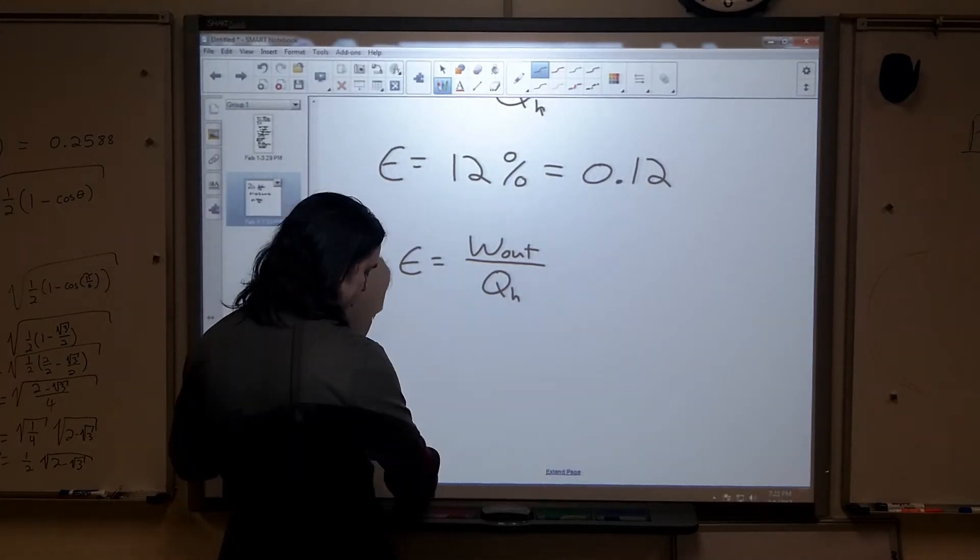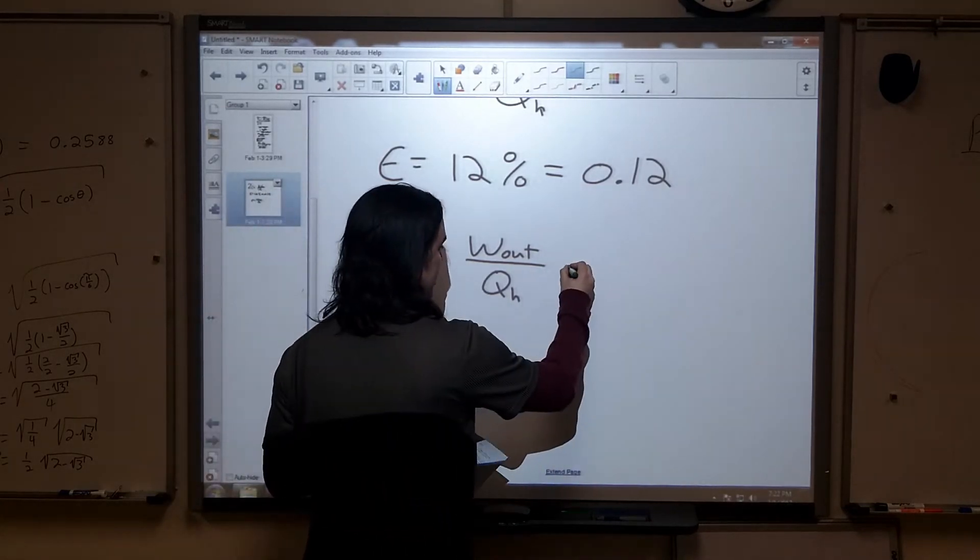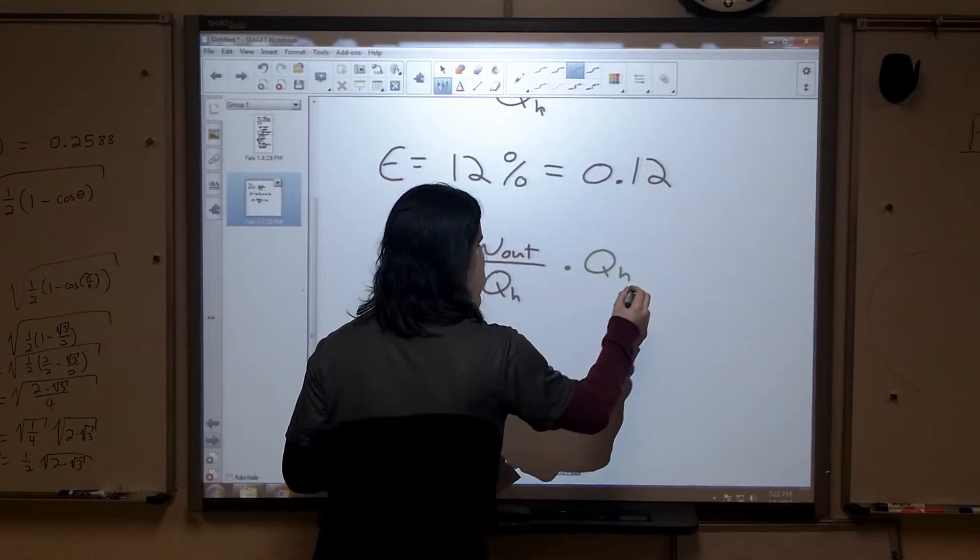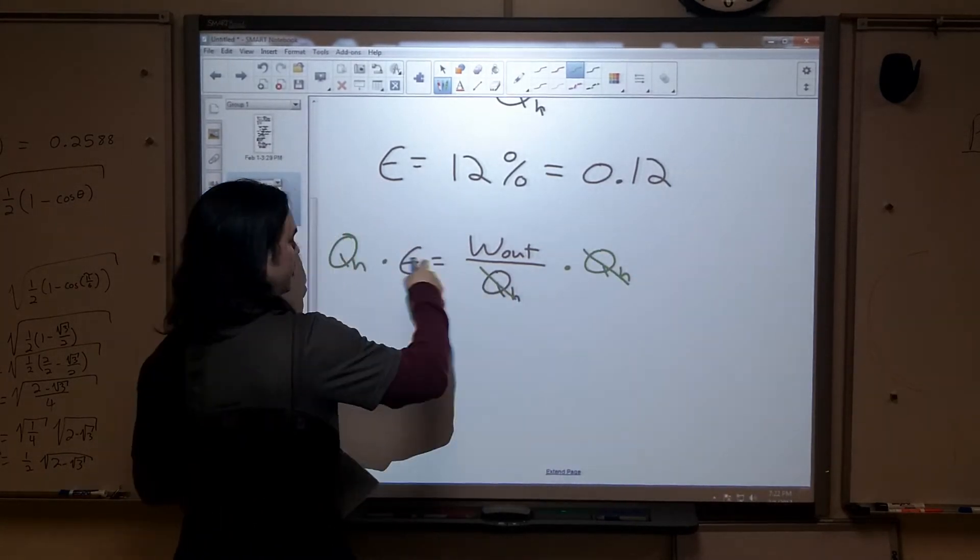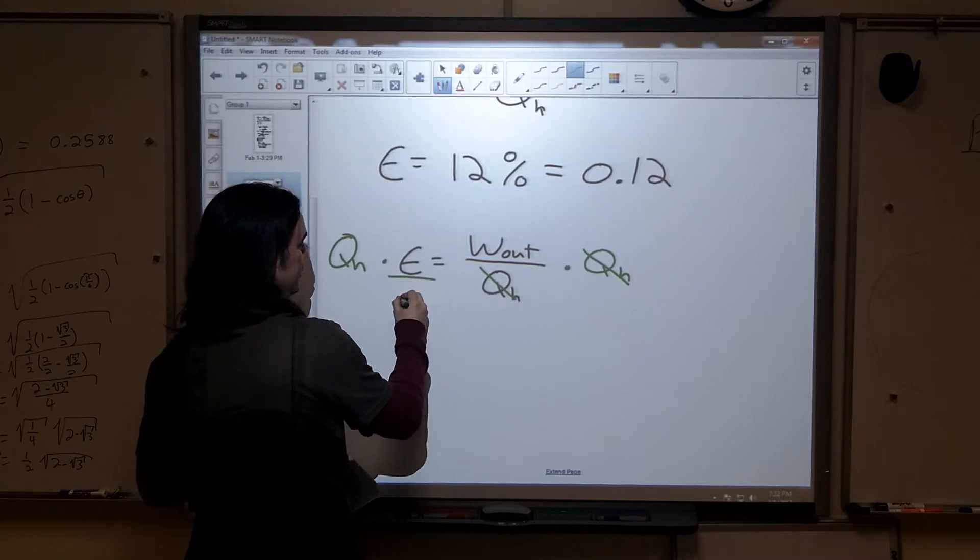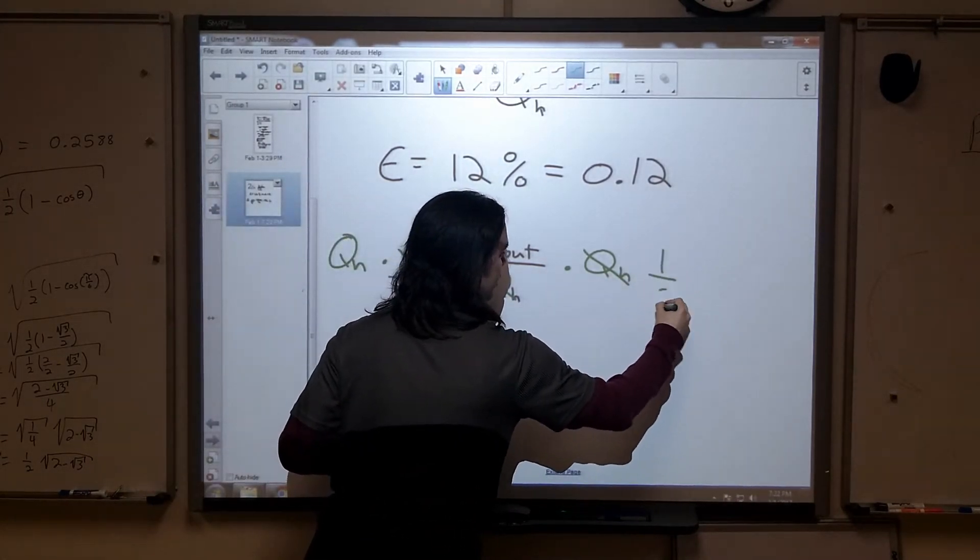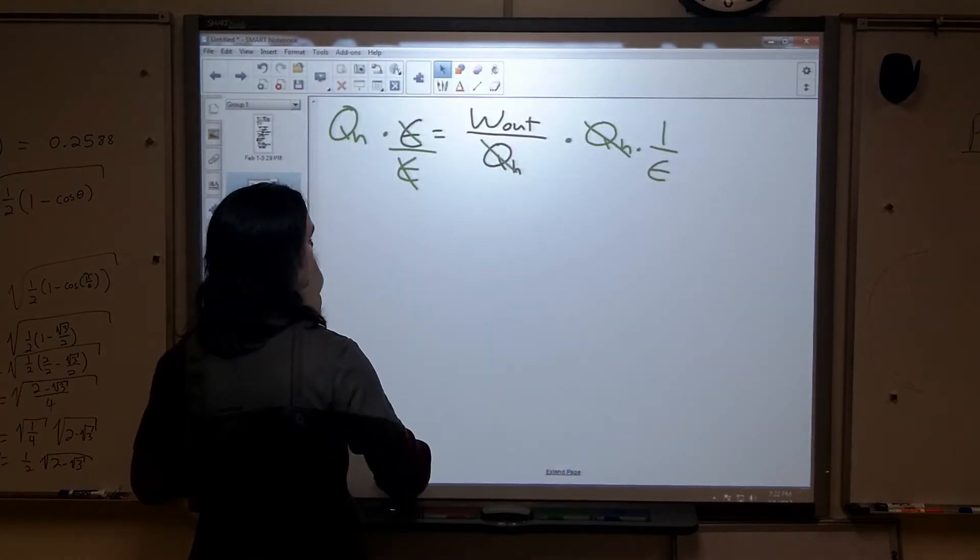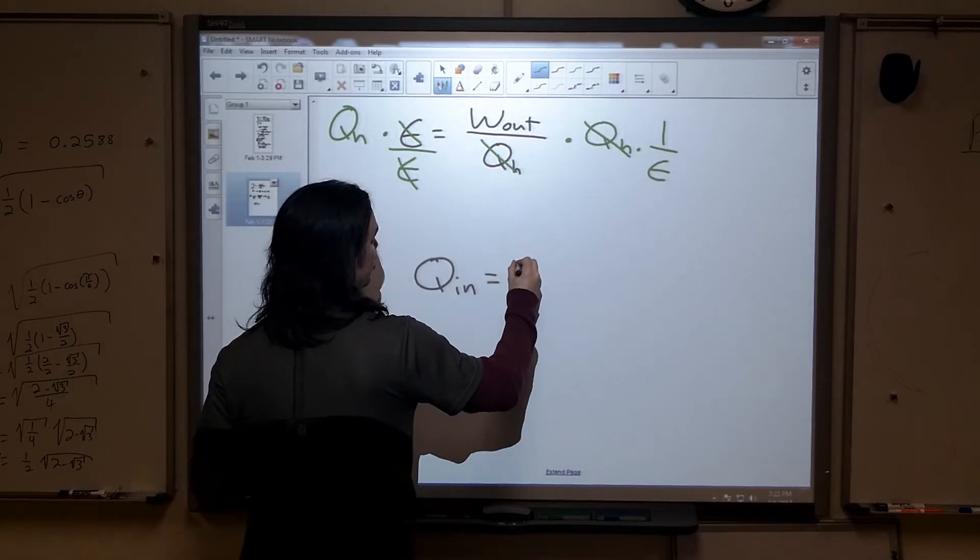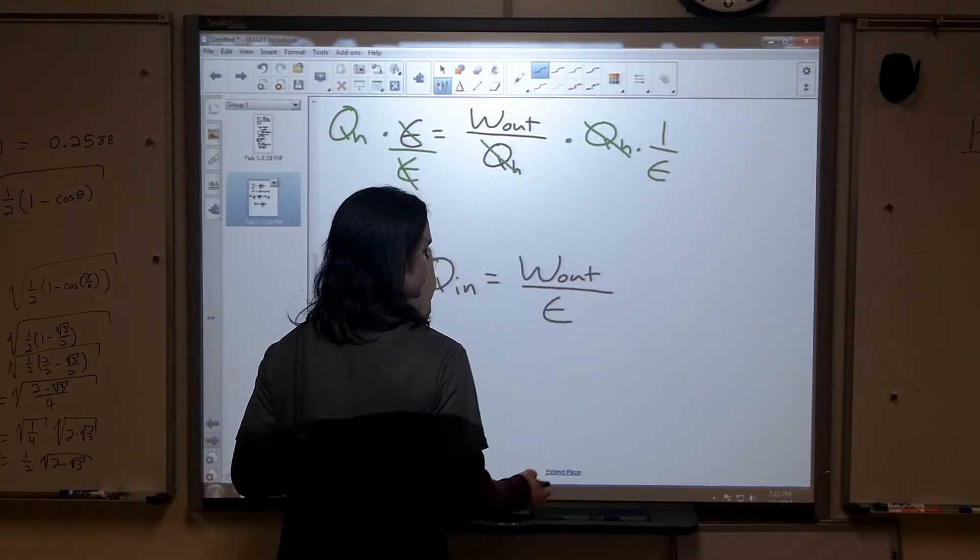I can move things around. I want to solve for the heat. They want me to find how much heat is put in. So I'm going to multiply both sides by Q_H, the heat from the hot reservoir. I'm going to move that over here. Then I'm going to divide by the efficiency. So I need to divide by the efficiency. And I end up with the following equation: Q_H equals work out divided by the efficiency.